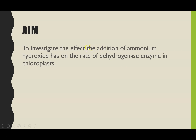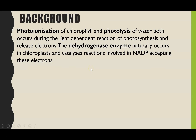The variable that I'm going to be changing is ammonium hydroxide, and that's actually the one that AQA suggests in their required practical handbook. So we're going to be looking at whether adding ammonium hydroxide increases, decreases, or potentially stops the rate of dehydrogenase enzymes. Because this enzyme is not on the specification, I'm going to start off with a bit of background about photosynthesis and some of the chemicals we're going to be using in this reaction.